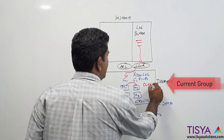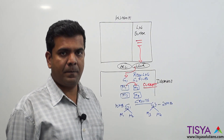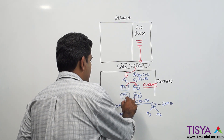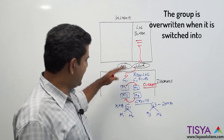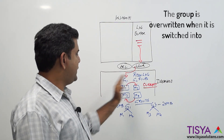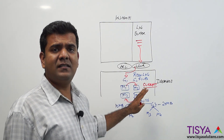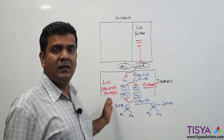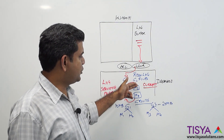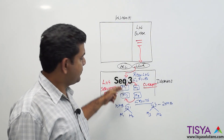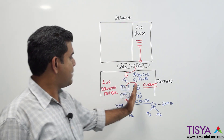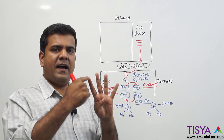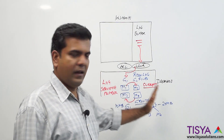The group to which the log writer is currently writing is called the current group. Once group two also fills, with only two groups the log writer switches back to group one and overwrites the contents. Every log switch results in a log sequence number being incremented. So it starts at sequence one, switches to sequence two, three, four, and so on. With four groups you'd see sequence one through eight cycling through.